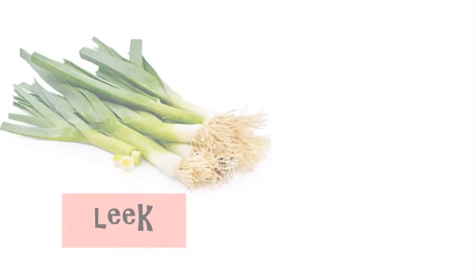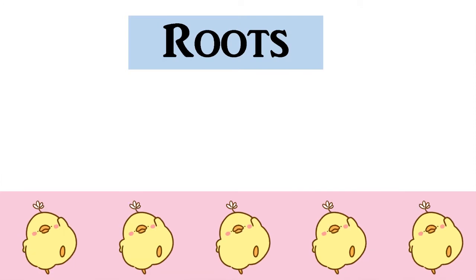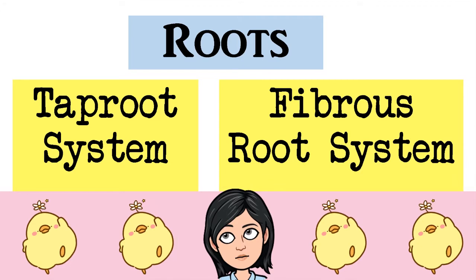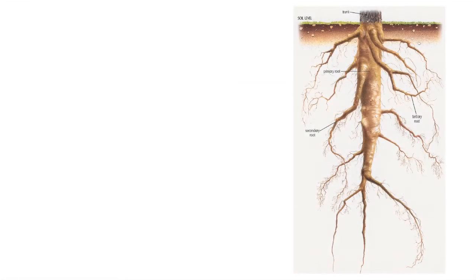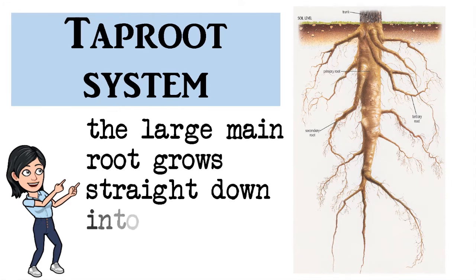Look at the leaf plant and the lettuce plant. Can you tell the difference between the roots of these plants? Plants can have either a taproot system or a fibrous root system. A plant's taproot is a large main root that grows straight down into the soil. Other smaller roots grow from it. This type of root system is known as the taproot system.